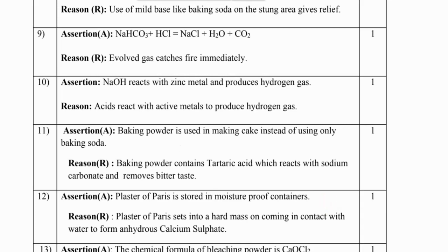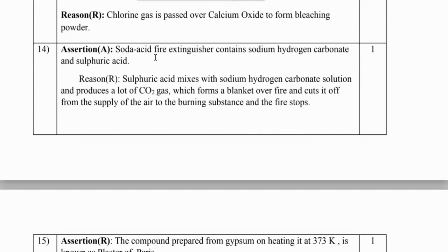Question number 13: soda acid fire extinguisher contains sodium hydrogen carbonate and sulfuric acid. When mixed, sulfuric acid with sodium hydrogen carbonate solution produces a lot of carbon dioxide gas, which forms a blanket over fire, cutting off the air supply to the burning substance and stopping the fire. Both are correct with correct explanation, so A is the answer.